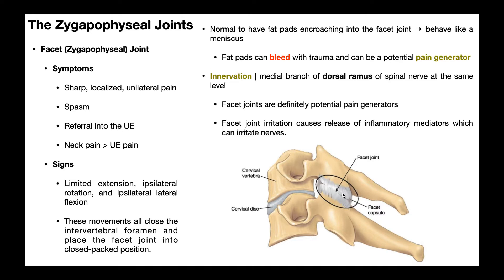What happens if somebody has facet joint dysfunction? The pain is going to be sharp, localized, and unilateral. If there's dysfunction of the left facet joint, the patient will feel pain on the left side, well-localized to that region. There may be muscle spasms in that area. Unlike uncovertebral joint dysfunction, it's very common for facet joint dysfunction to cause referral into the upper extremity — specifically the proximal part — going from the lower neck into the shoulder and scapular region.